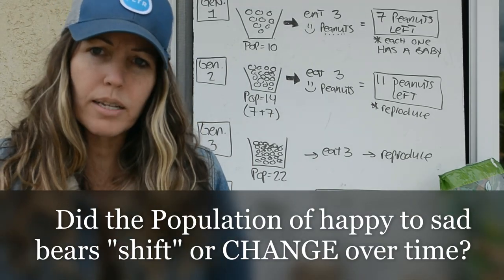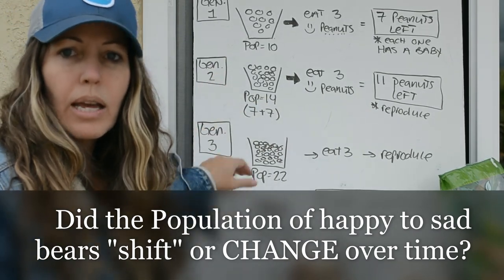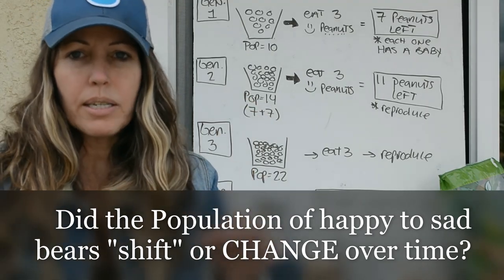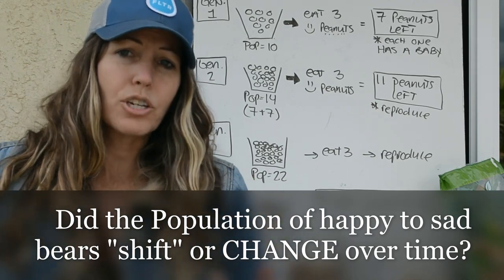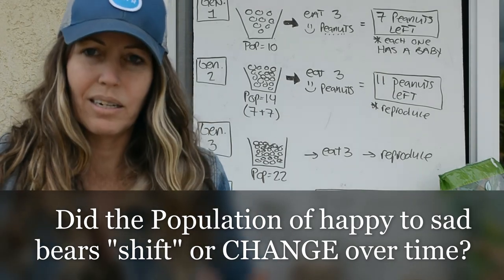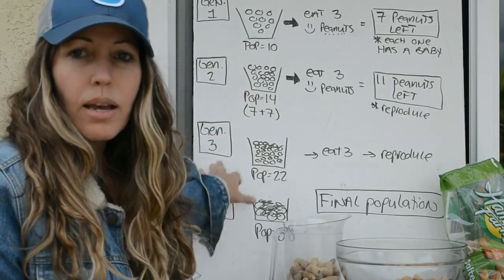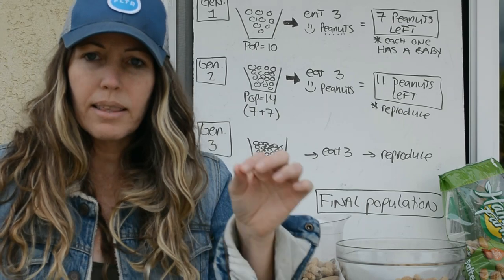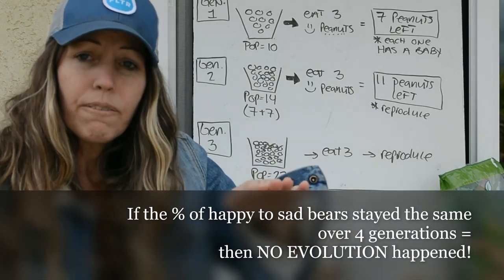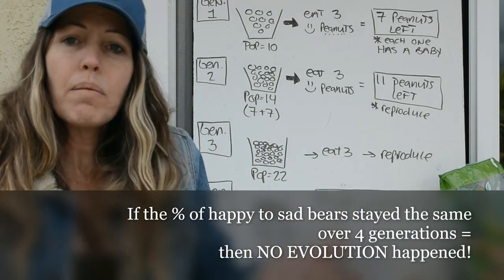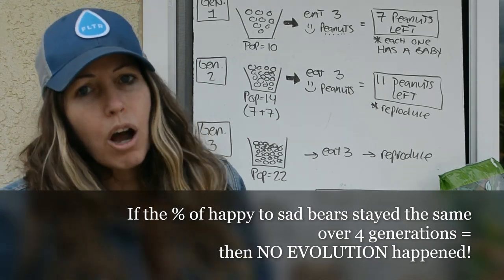What we're looking for is whether, throughout generations one through four, the population ratio of happy to sad shifted or changed. If it did, evolution is actually happening before our eyes. If the percentages stayed the same — say 50/50 from generation one to generation four — even with a predator eating, then there's no evolution. That's what we want to figure out: are these bears evolving or not?